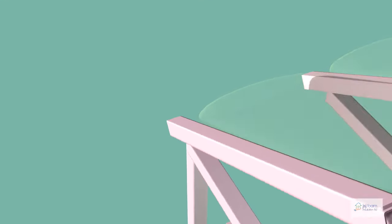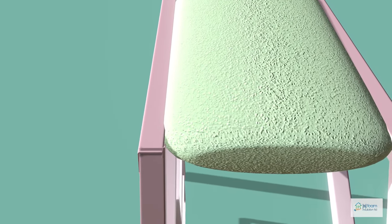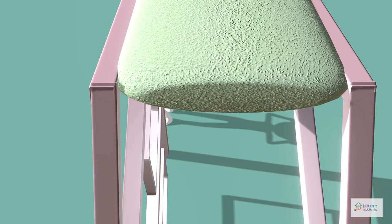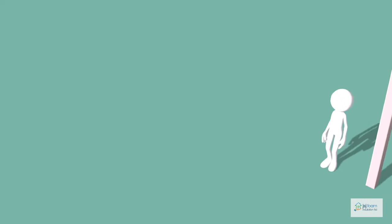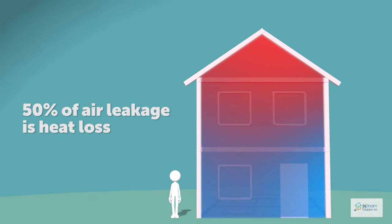When sprayed in place, Isene expands completely filling all cavities and voids, creating a sealed building envelope that eliminates air leakage and infiltration. Air leakage and infiltration accounts for up to 50% of heat loss from a building.